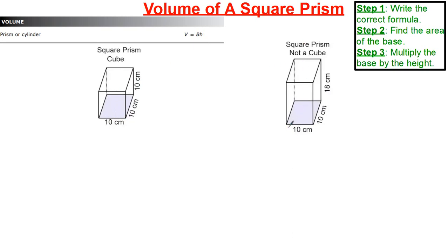Over here, you could say 10 length, 10 width, but 18 height. So this one is not a cube, but it's still called a square prism. Step one is to write the correct formula. The formula we need is volume equals base times height. The base is going to be the square face shown in purple — we have to calculate the area of that square first.